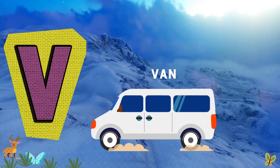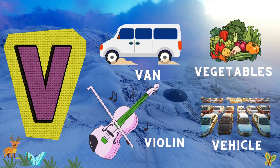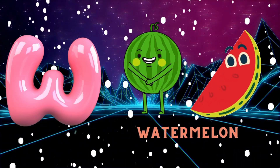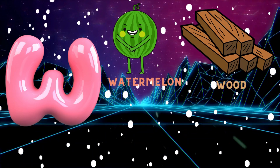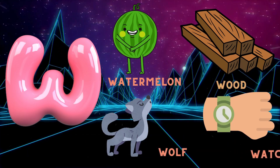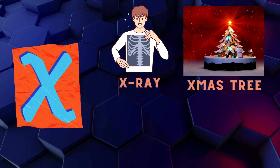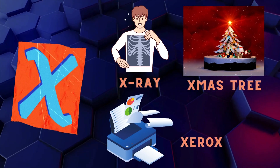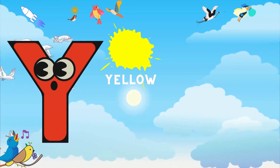V for van, vegetables, violin, and vehicle. W for watermelon, wood, wolf, and watch. X for x-ray, Christmas tree, and xerox. Y for...